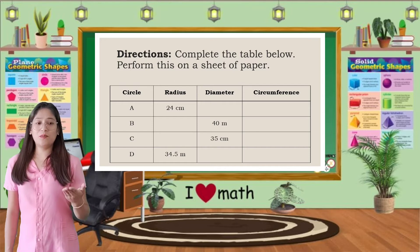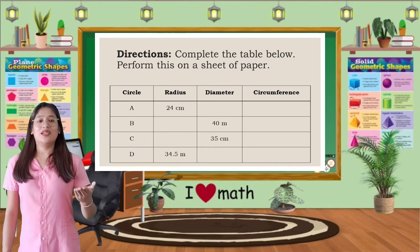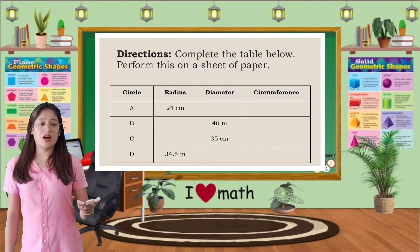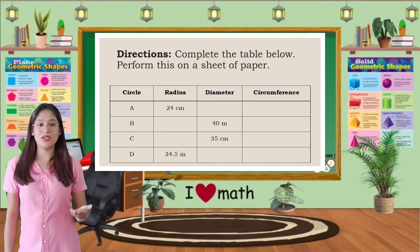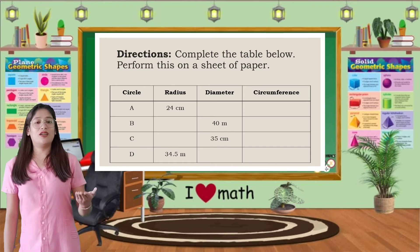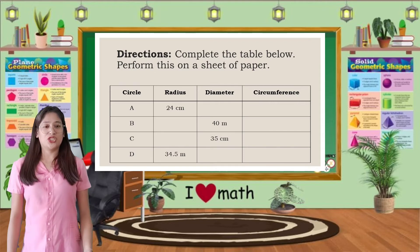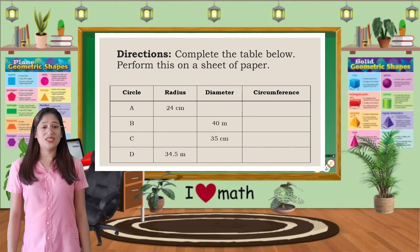We will complete the table. Some are blank on the radius, others are blank in diameter, and of course, all are blank in the circumference. Let's start.